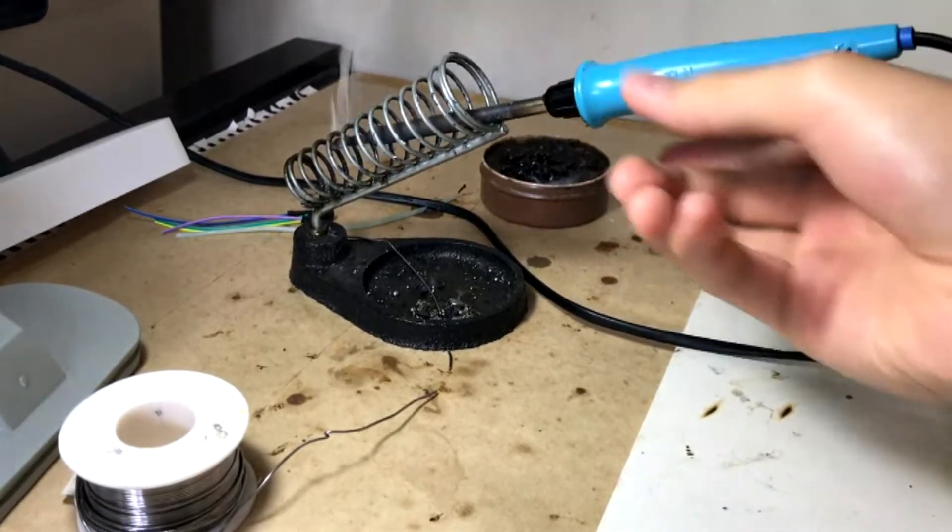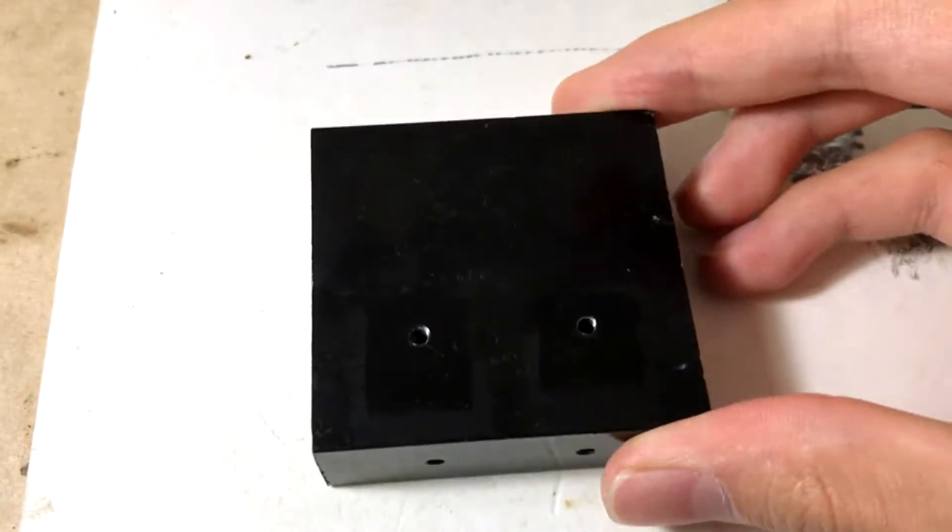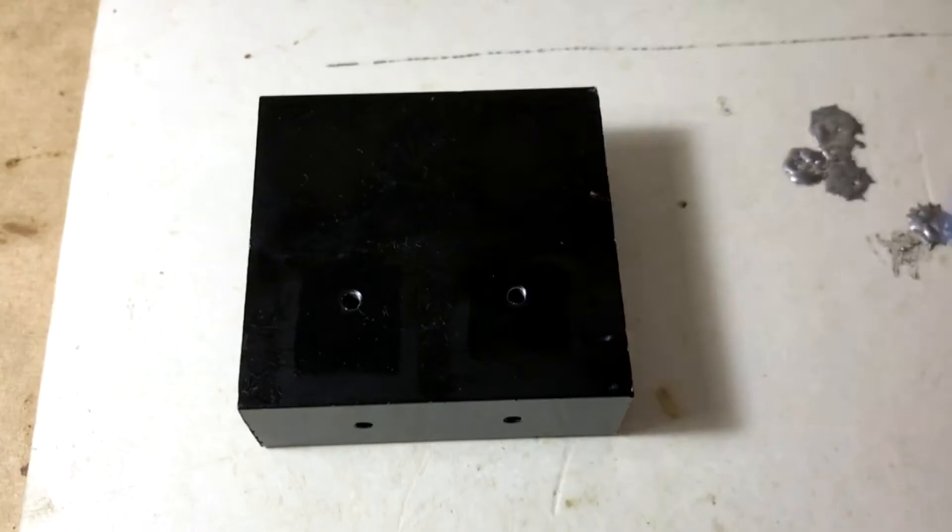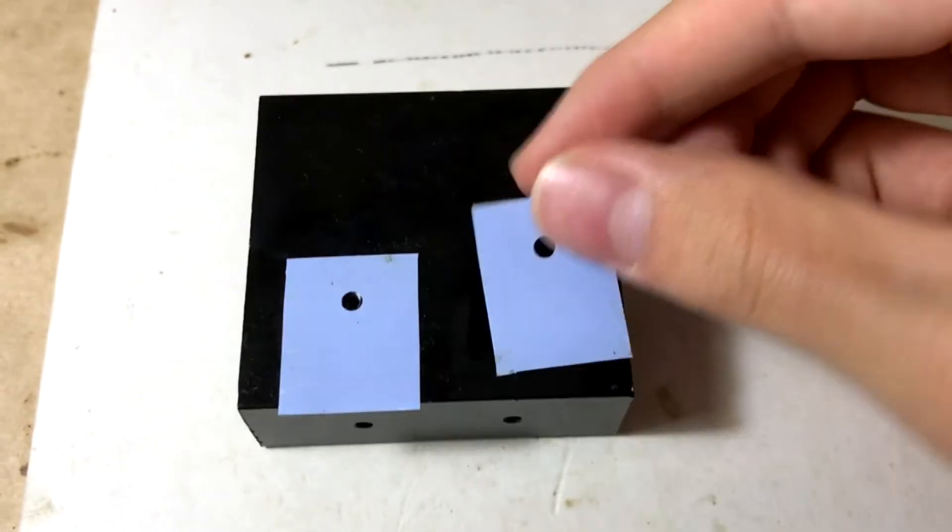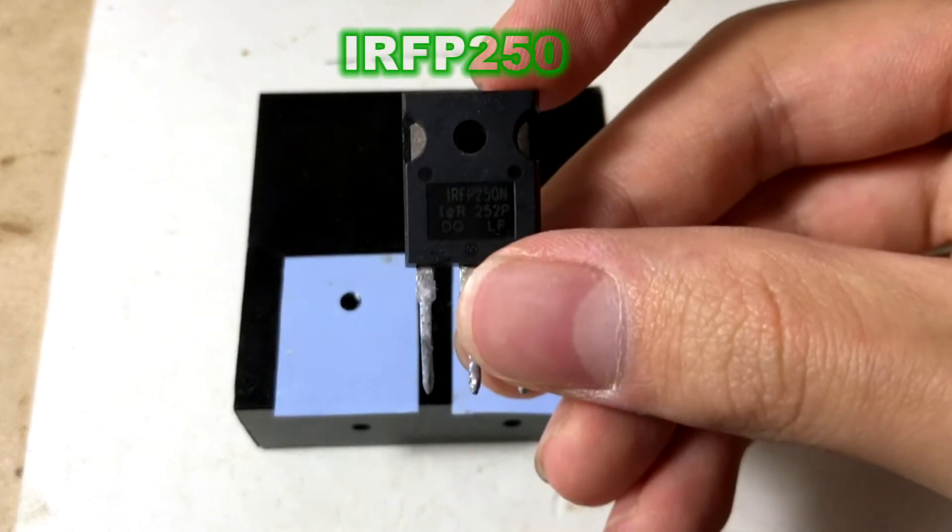First, prepare your soldering iron. Then you need a heat sink. It can help the components to cool down. This is the seal pad. Put them on the heat sink. This is a MOSFET.